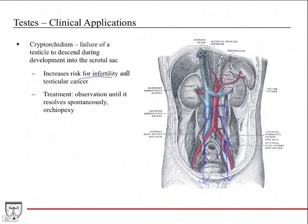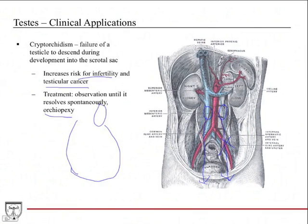These patients are also at increased risk for testicular cancer. The treatment is to observe until spontaneous resolution occurs. If that doesn't happen, a surgery called orcheopexy can be performed, in which the testicle is pulled down into the scrotal sac and surgically fixed there so it can't reflux back into the abdomen.